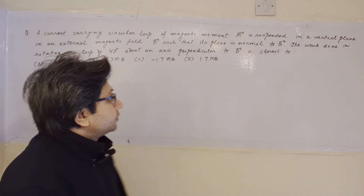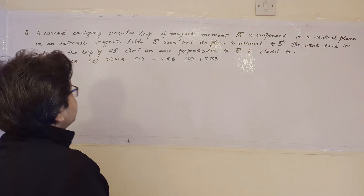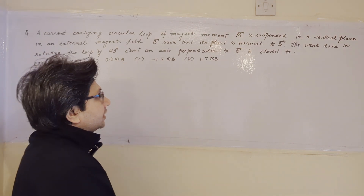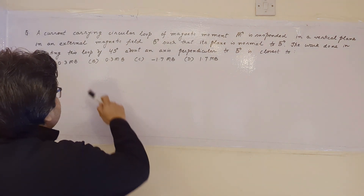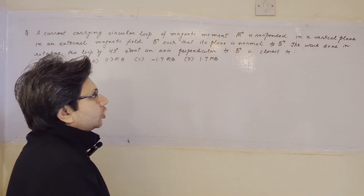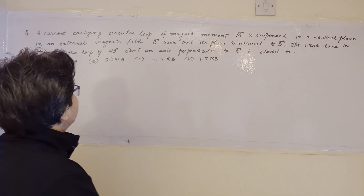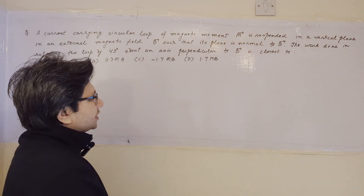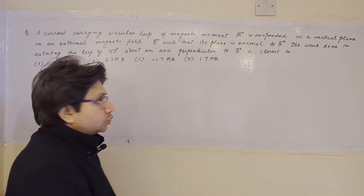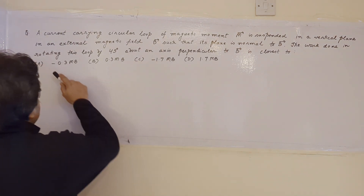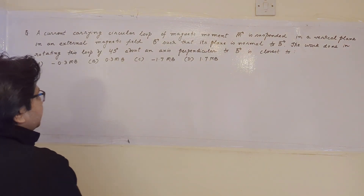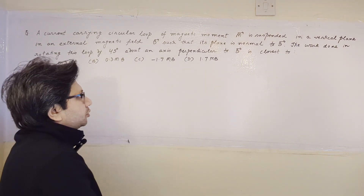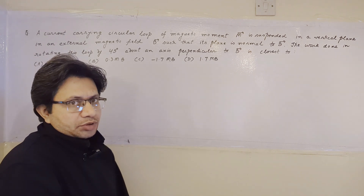Hello students. The question is: a current carrying circular loop of magnetic moment M is suspended in a vertical plane in an external magnetic field B, such that its plane is normal to B. The work done in rotating this loop by 45 degrees about an axis perpendicular to B is closest to: option A minus 0.3 MB, option B 0.3 MB, option C minus 1.7 MB, and option D 1.7 MB.